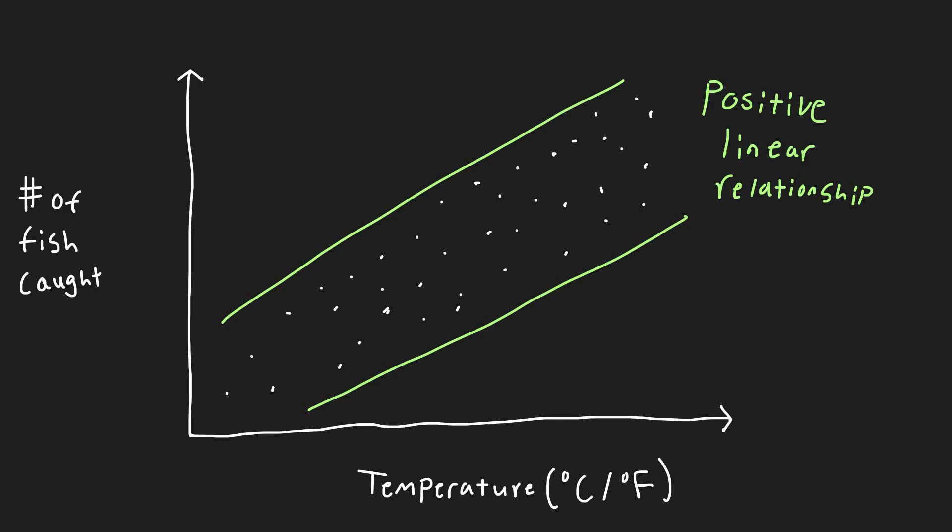Looking to visualize this relationship, you started plotting the amount of fish versus the temperature with the temperature on the x-axis and fish caught on the y-axis. After plotting the data, you saw a positive linear relationship on the scatter plot appearing to show that as temperature increased, so did the number of fish caught.